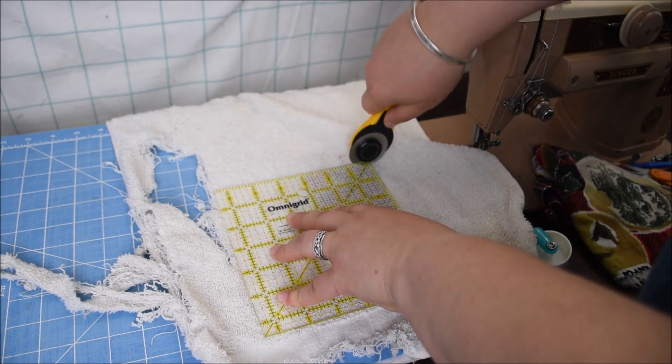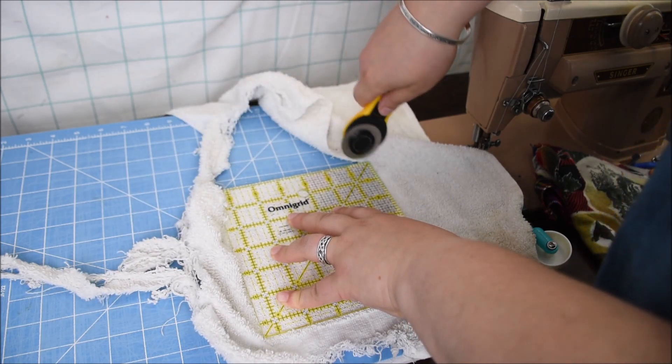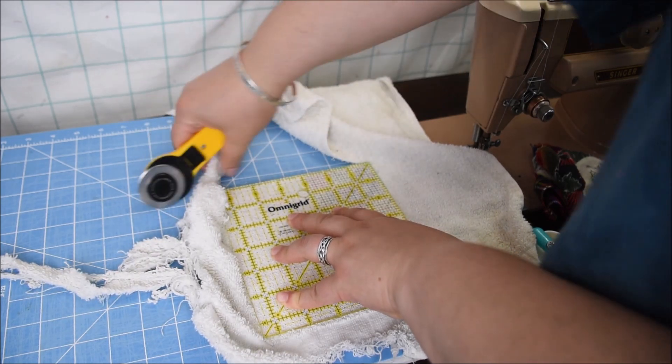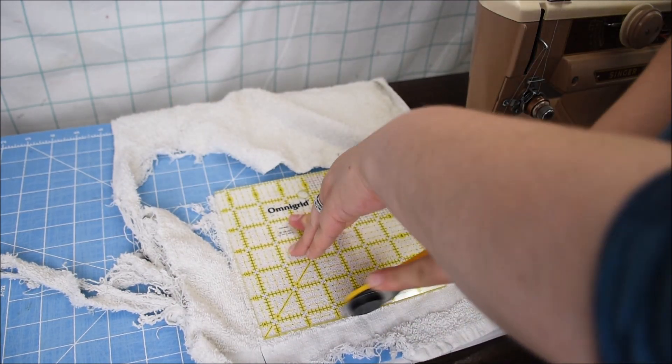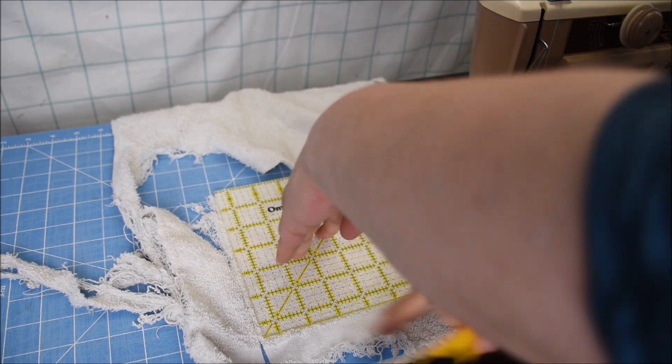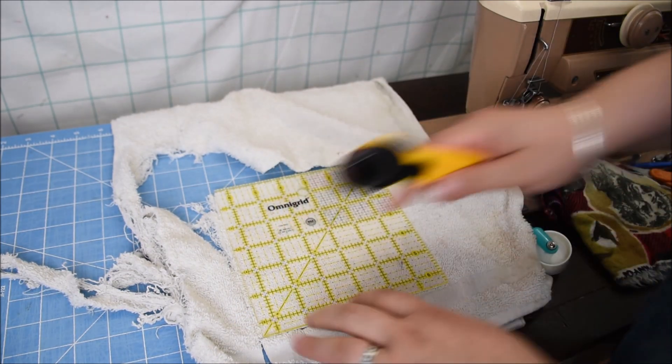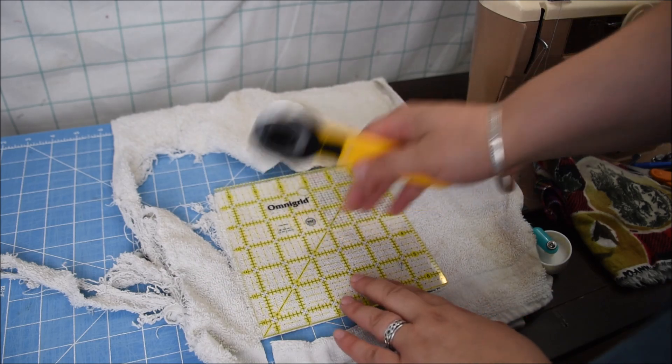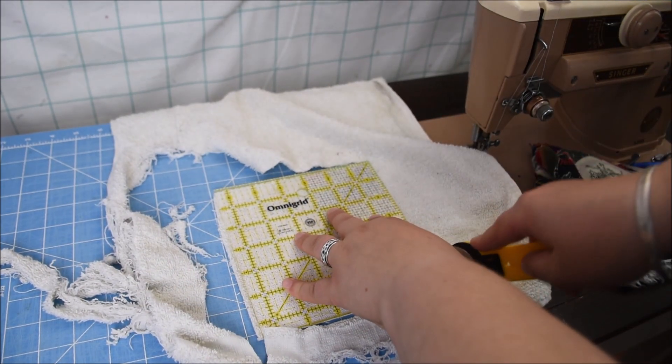Now this really is a scrappy piece of towel because it's one that the dogs got into and destroyed when they were puppies. So I'm just cutting out a six and a half inch square here. You could also use some terry cloth or if you happen upon a good deal at a thrift store or a yard sale for a towel, that would also be great.